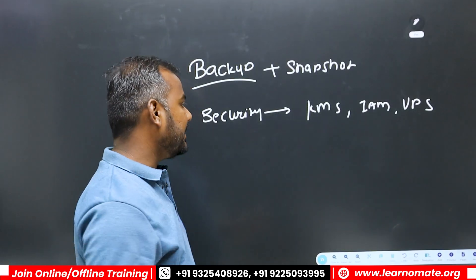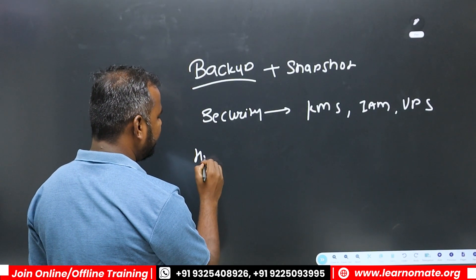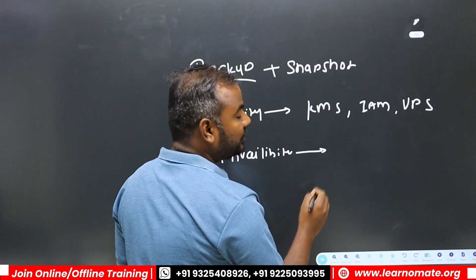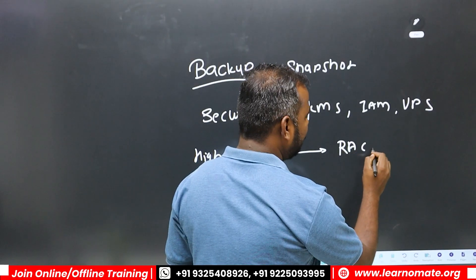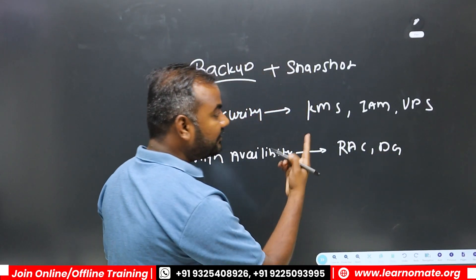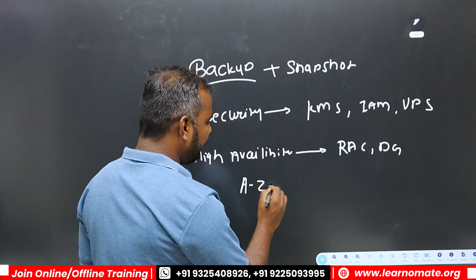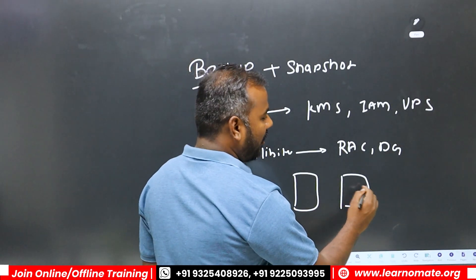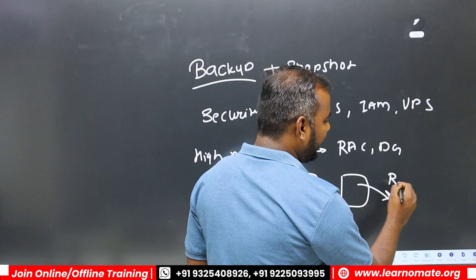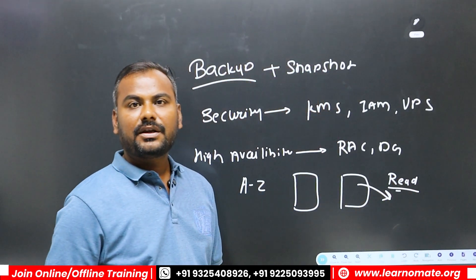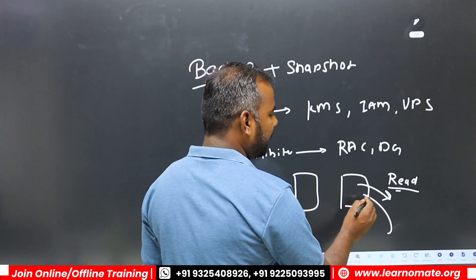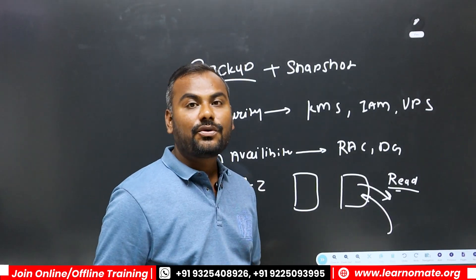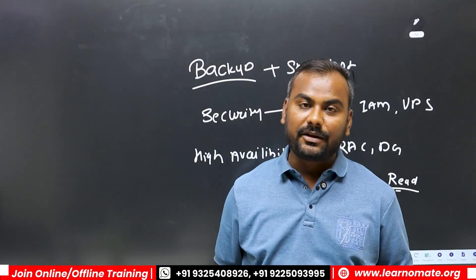Most importantly, AWS RDS also supports high availability concepts. Similar to Oracle RAC used in traditional setups, AWS RDS provides a complete solution where you can have a primary server and a standby server. On the standby server, reader applications can connect so users can read data from the standby as well.